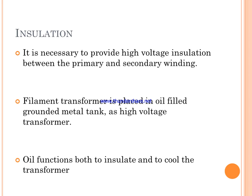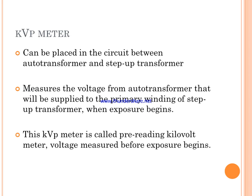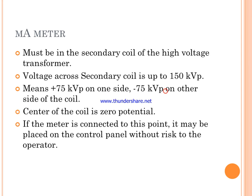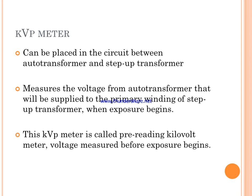Insulation is very necessary to provide high voltage insulation between primary and secondary wiring. The filament transformer is placed in an oil-filled grounded metal tank, as is the high voltage transformer. The oil functions both to insulate and to cool the transformer. The kVp meter is placed in the circuit between the auto transformer and the step-up transformer.